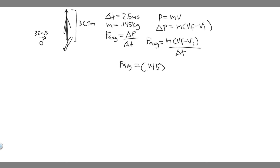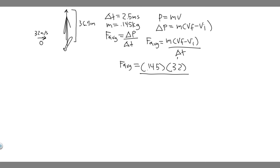The change in velocity in x is 32 m/s (v_final 0 minus v_initial 32). The negative sign won't impact the final result since we're going to square it later, so we just use 32. We divide by the contact time: 2.5 milliseconds, which is 0.0025 seconds. So: 0.145 times 32, divided by 0.0025, gives us 1,856 newtons. That's the average force in the x direction.